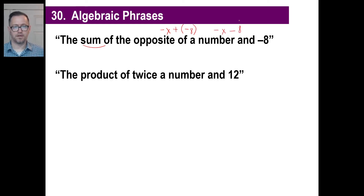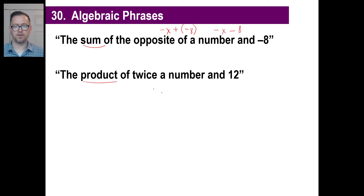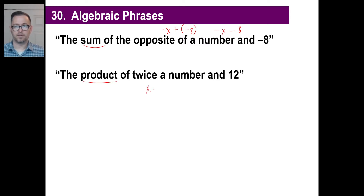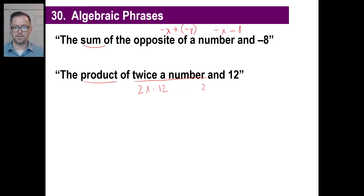Here's another: 'the product of twice a number and 12.' Product means we're going to multiply, so something's going to get multiplied — you can use a dot or parentheses. Twice a number: if a number is X, then twice a number is 2X. We're going to multiply 2X by 12, which gives us 2X times 12, or 24X.